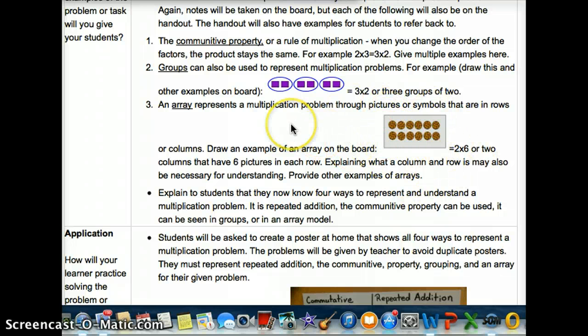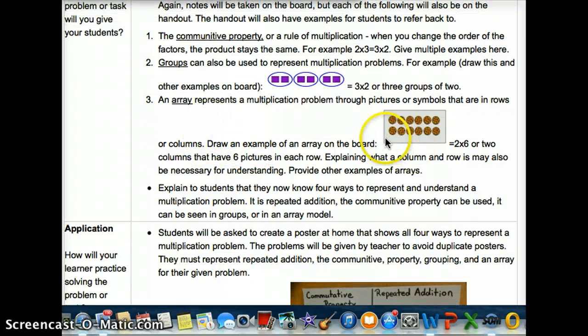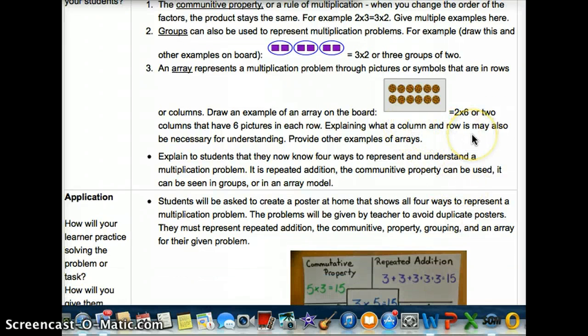Another way to represent would be an array and this is an array here. And we'll talk about how it's through pictures and symbols and they're in rows or columns. Some students might need to better understand that this is a row and this is a column. And you'll draw this example and this represents two times six or they have two columns that have six pictures in each row. Again, you might have to explain what a column and a row is and you'll also have to provide other examples.